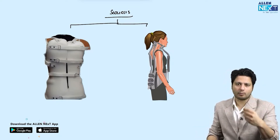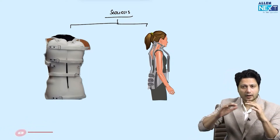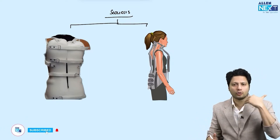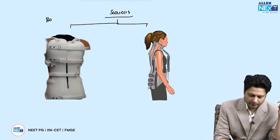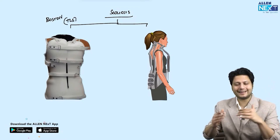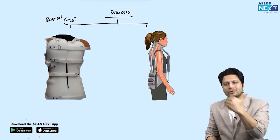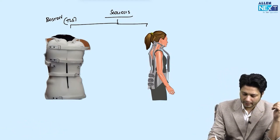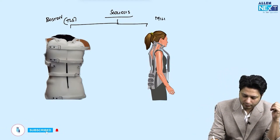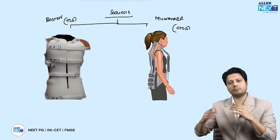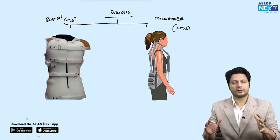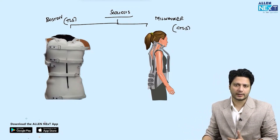There are two braces that could be shown to you as images. One covers the trunk only with no cervical immobilization — that is the Boston brace, also known as the TLSO brace, meaning thoracolumbo-sacral immobilization. On the other hand, if there is immobilization of the cervical column as well, that brace is identified as CTLSO — the Milwaukee brace.